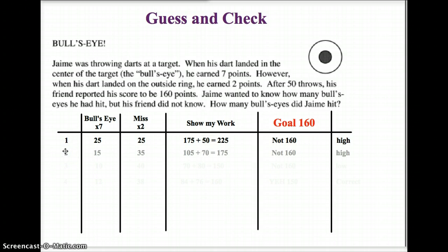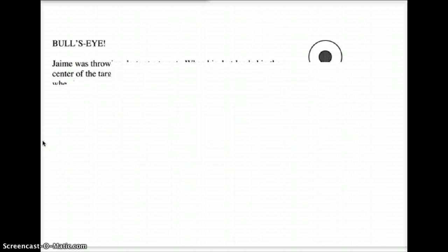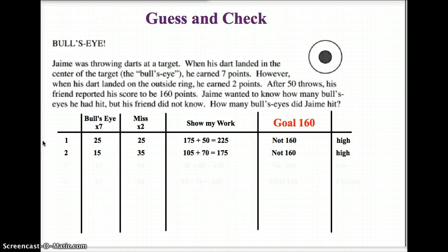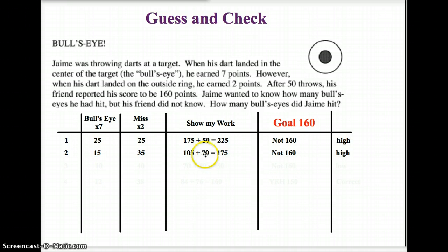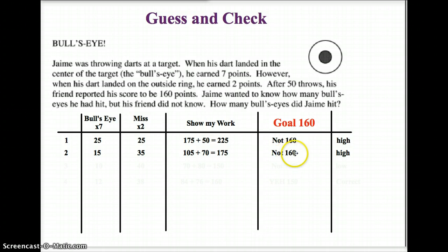If I didn't get 25 bullseyes, maybe I only got 15 bullseyes and 35 misses. That seems reasonable. But 15 times 7 is 105, and 35 times 2 is 70. When I add those together I get 175. And I'm too high one more time. I wanted to get to 160, I'm at 175.